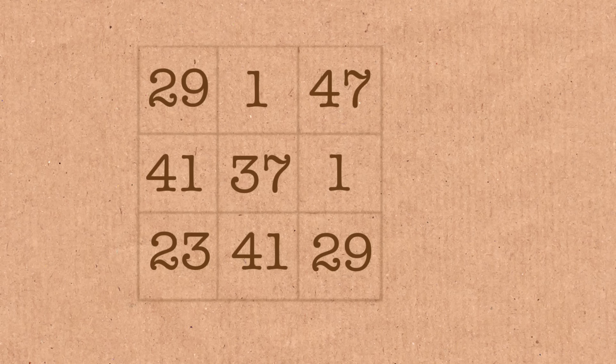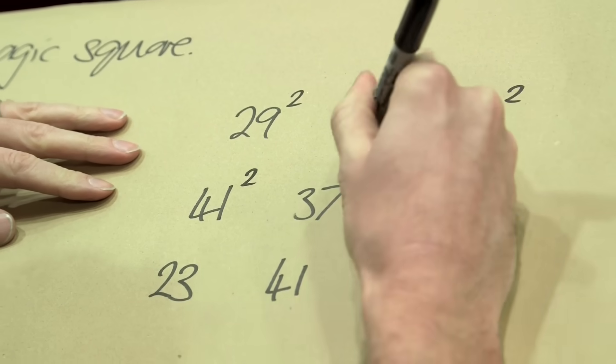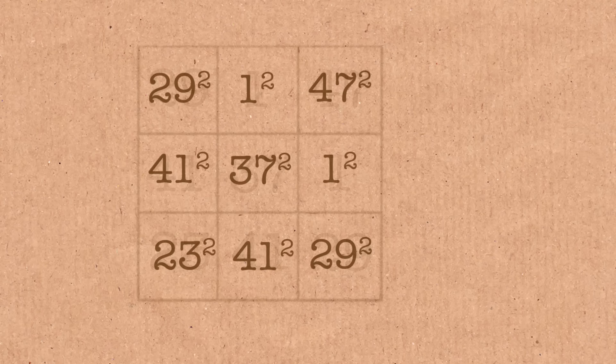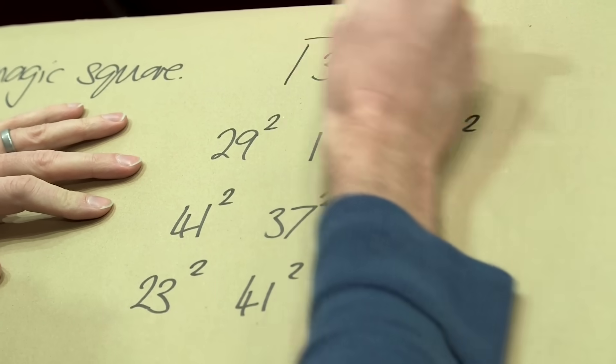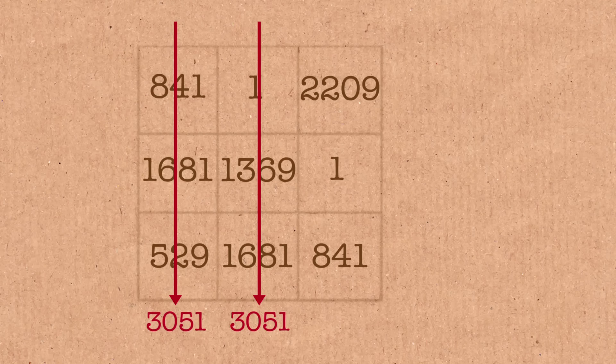There are a few problems with this one. For a start it does work. If I go through and square all of these and then check the adding up, the total for this square is 3,051 and it works for all the columns. It works for all the rows.